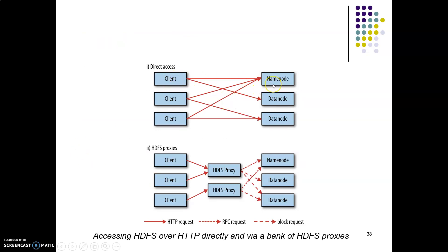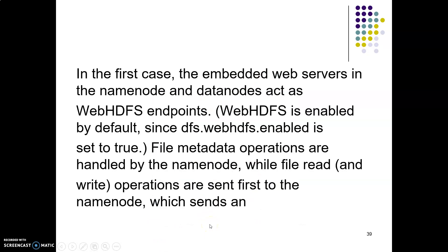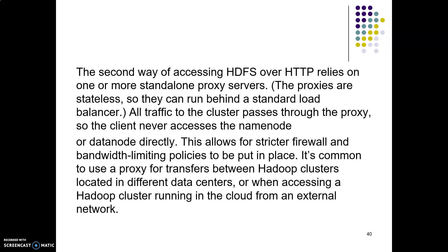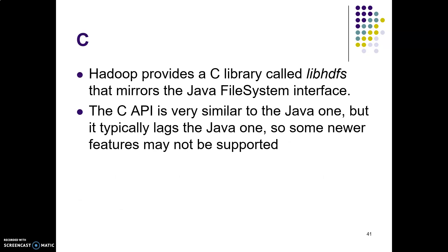In direct access, the client directly accesses the name node or data nodes. In indirect access using proxies, the client goes through an HDFS proxy which maintains rules and regulations for each client to access the data, with every request served via a remote procedure call. In direct access, embedded web servers in the name node and data nodes act as WebHDFS endpoints. In the proxy case, rules such as bandwidth limiting policies are applied.